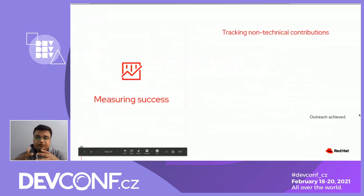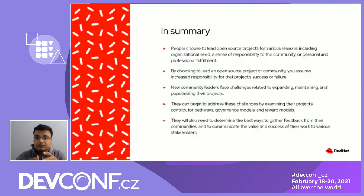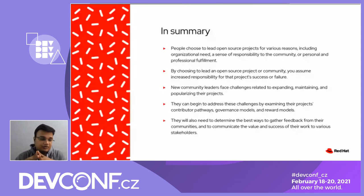People choose to lead open source projects for various reasons, including organizational needs, a sense of personal responsibility, or personal fulfillment. By choosing to lead an open source project, you assume increased responsibility for that project's success or failure. New community leaders face challenges related to expanding, maintaining, and popularizing their projects, and they can begin to address these challenges by examining their projects' contributing pathways, governance models, and reward models. They will need to determine the best way to gather feedback from their communities and communicate the value and success of their work to various stakeholders.